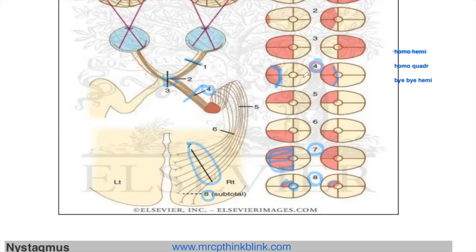So to summarize: number four is with the optic tract, number seven is with the optic radiation, and the last one is with the occipital lobe. That finishes our homonymous hemianopia.